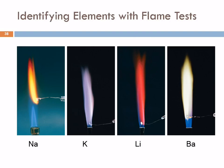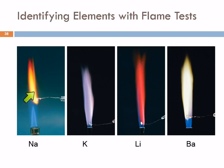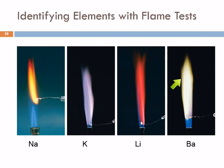We can also see this in what's known as a flame test. You put sodium into a flame, provide it with energy, and you get a very distinctive bright yellow glow. Potassium gives a lavender flame. Lithium gives a red flame. Barium gives a greenish flame, though barium's hard to see.